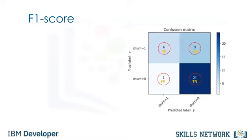Based on the count of each section, we can calculate the precision and recall of each label. Precision is a measure of the accuracy, provided that a class label has been predicted. It is defined by precision equals true positive divided by true positive plus false positive. And recall is the true positive rate. It is defined as recall equals true positive divided by true positive plus false negative.